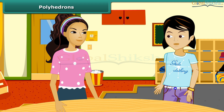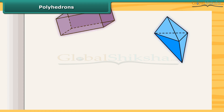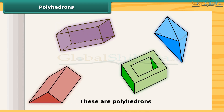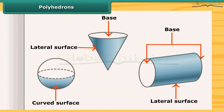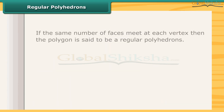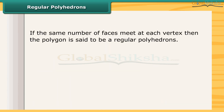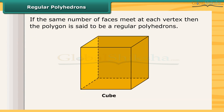Those solids are called polyhedrons. These all solids are polyhedrons. Are these objects polyhedrons? No, these are not polyhedrons, because they do not have flat faces. If the same number of faces meet at each vertex, then the polyhedron is said to be a regular polyhedron. A cube is a regular polyhedron because three faces meet at each vertex.